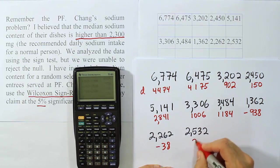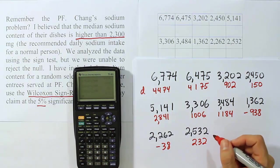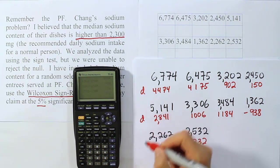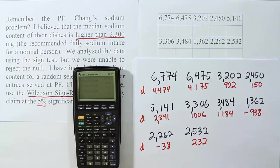And then lastly, we have 2532 minus 2300, and when all said and done, that's 232. So there's our row of differences. Each one of these is a column of differences.